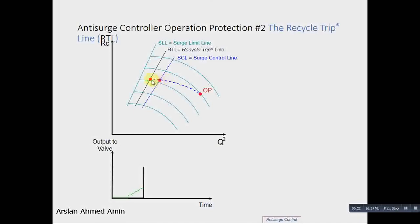When your operating point touches this recycle trip line, a quick response is generated, and this magnitude is equal to the derivative of this rate of change. Therefore, the total response is the sum of this PI response plus this recycle trip response. And therefore, the operating point returns back to the surge control line.